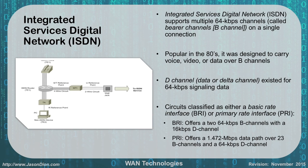The next one is ISDN. With ISDN you could actually carry multiple 64K voice or data channels, called bearer channels or B channels, on a single connection. Back in the 80s this was very popular and designed to carry voice, video, and data over B channels. D channels, or delta channels, existed for 64K signaling data, just like in T1 connections. Remember with a T1 we had 24 64K channels — ISDN could also be broken up similarly.